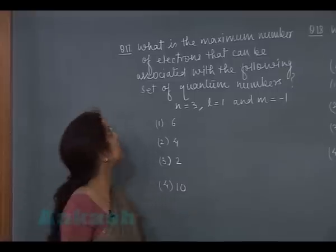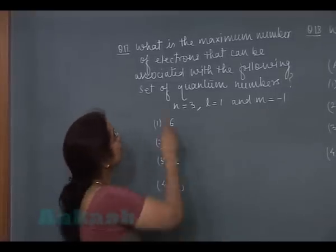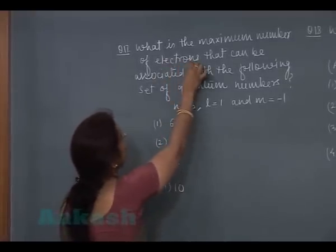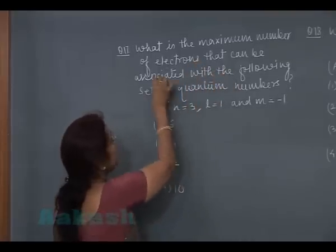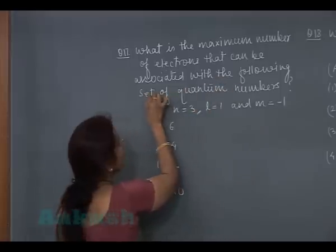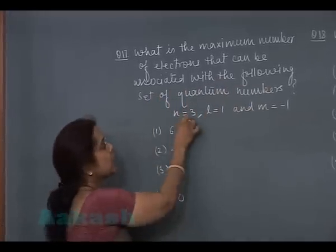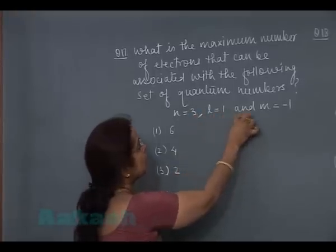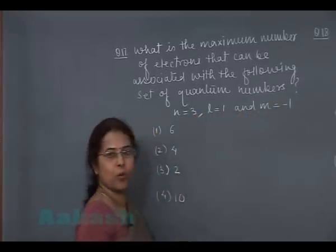Let's see the next question. Question number 17. What is the maximum number of electrons that can be associated with the following set of quantum numbers? N is equal to 3, L is equal to 1, and M is equal to minus 1.